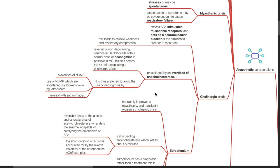Reversal of non-depolarizing neuromuscular blockade with a normal dose of neostigmine is possible in MG, but this carries the risk of precipitating a cholinergic crisis. It is thus preferred to avoid the use of neostigmine by avoidance of non-depolarizing neuromuscular blockade, use of non-depolarizing neuromuscular relaxants which are spontaneously broken down such as atracurium and cisatracurium, or use of rocuronium with reversal with sugammadex.